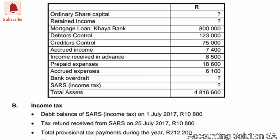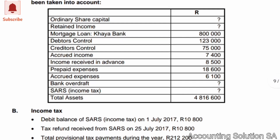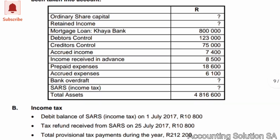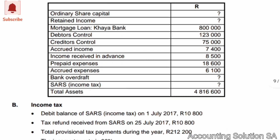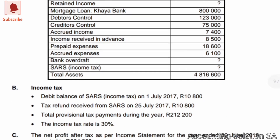Moving to information B: a debit balance of SARS income tax on 1 July 2017 (beginning of the year) was 10,800. A tax refund received from SARS is also 10,800. We also have a total provisional tax payment figure, and the income tax rate is 30%.